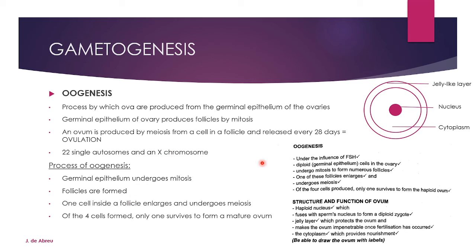Because males have X and Y chromosomes, sperm cells will either have an X or a Y chromosome. In the process of oogenesis: under the influence of FSH (follicle-stimulating hormone), the diploid germinal epithelium cells in the ovary undergo mitosis to form numerous follicles. One follicle enlarges and undergoes meiosis. Of the four cells produced, only one survives to form the haploid ovum — the other three die. Whereas in males all four cells live, which is why males produce far more sperm cells than females produce ova.